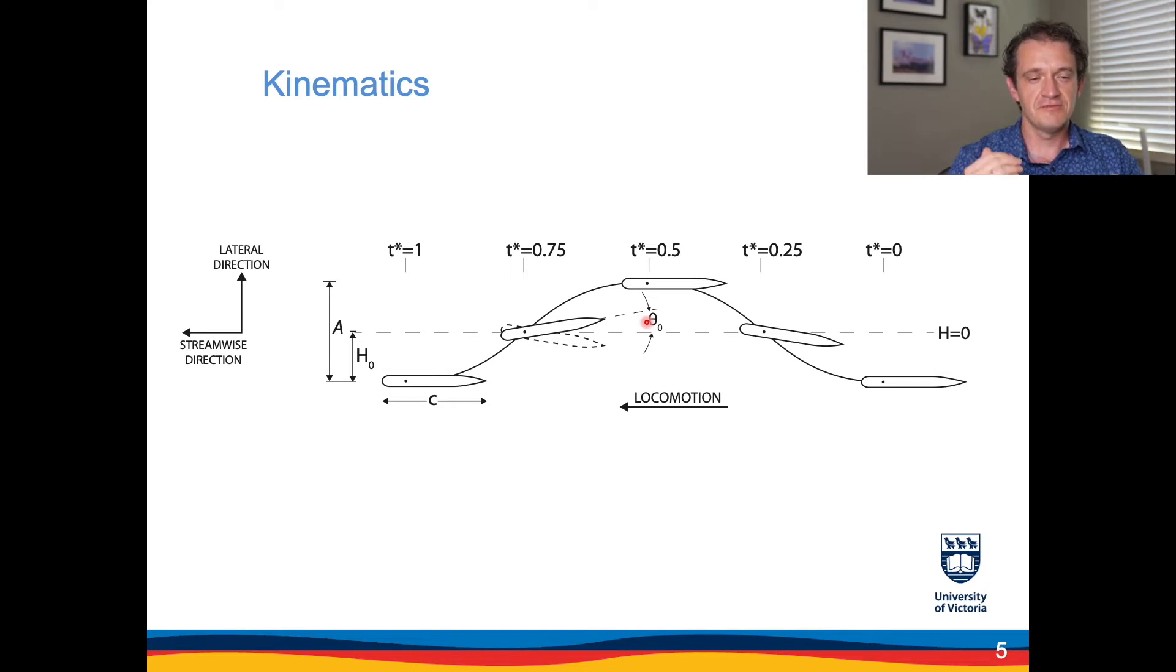They are sinusoids with the same frequency but the phase between them varies, and in fact we use the negative values of theta zero to indicate the phase where the foil is pitching down as it moves up. And for the positive values of theta the foil is pitching up as it moves up in this schematic.